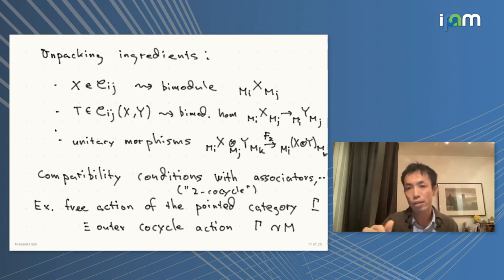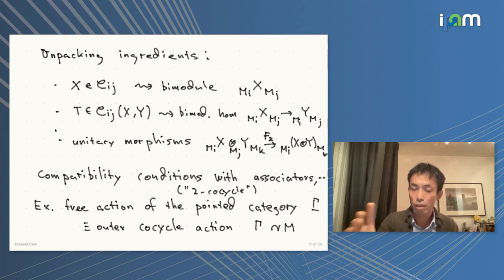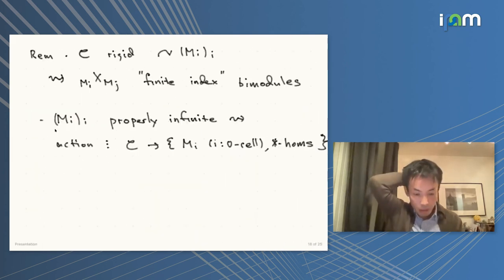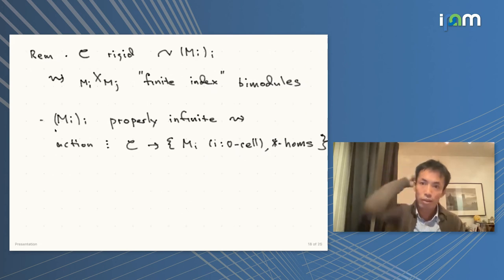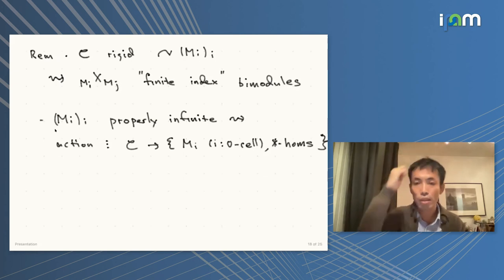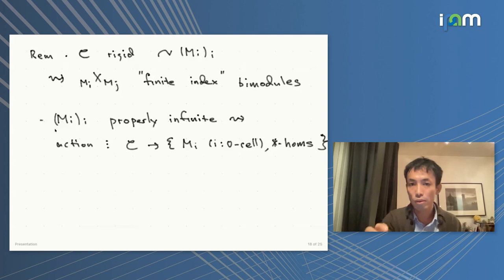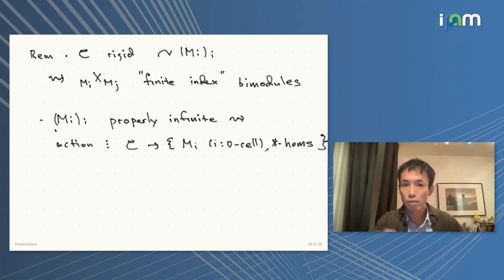A free action of the pointed category Γ̄ — with Γ as a monoidal category using the group product as monoidal product with trivial associator — is just an outer cocycle action of Γ on M. An immediate consequence: if you look at the action of the widget category on von Neumann algebras, from the structural morphisms for duality in C you get finite index bimodules, or finite index homomorphisms for properly infinite models.